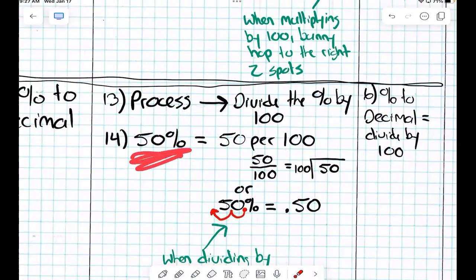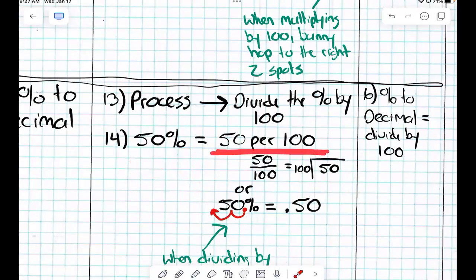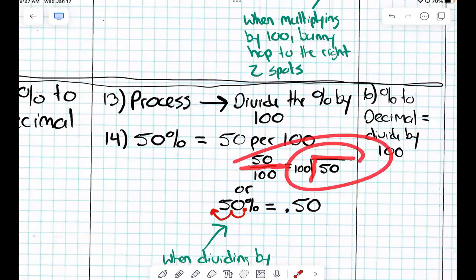Because if I say 50%, you guys don't say 50%, you say 50. And we know per means, which we know is a division problem, right? So you could do 50 divided by 100, right? Or you could just do two bunny hops to the left, since 100 is the power of 10, yes? You like that way better?